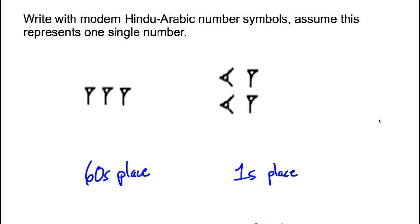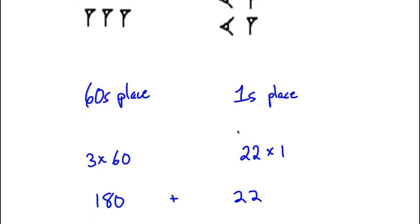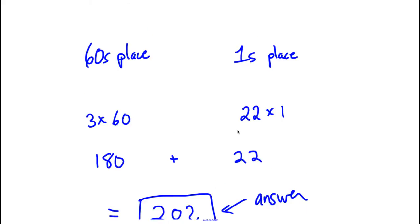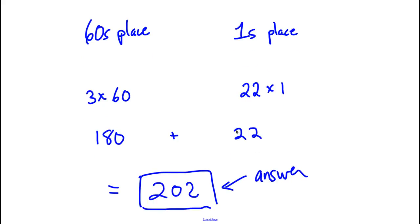The first thing you realize is that you've got the two groupings here, but if this is all one single number, that's the 60s place first here. This is how many 60s you have, and this is how many 1s you have. This is three 1s in the 60 place. So, that's three 60s, three times 60. That's 180 right there. That's 22 in the 1s, so this is 180 plus 22 is 202. 3 60s, 22 in the 1s makes 180 plus 22, answer is 202.